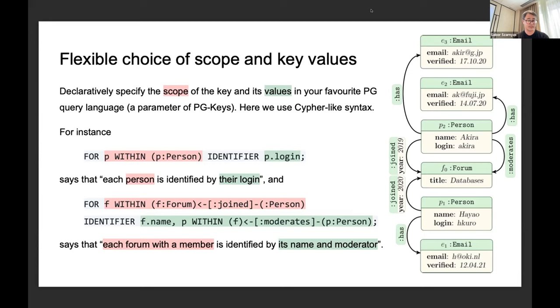Suppose we want to say that each person, so each p node labeled person, each of these objects is identified by the value of the login property. In PG-Keys, we would specify that as a pattern. For p within that pattern, it selects nodes labeled person. These objects p are identified by the value of their login property.